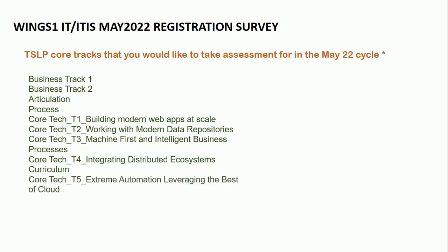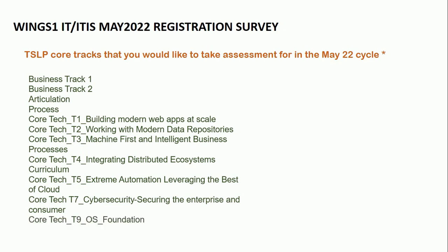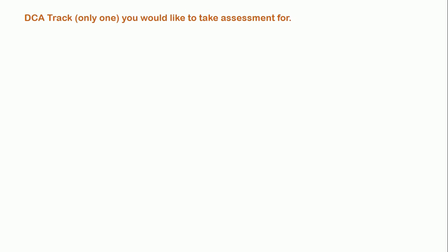Continuing with core track options: Core Tech T5 - Extreme Automation, Leveraging the Best of Cloud, Core Tech T7 - Cyber Security, Securing the Enterprise and Consumer, Core Tech T9 - OS Foundation, and then the DCA Track. You can choose any of these as per your convenience, and after that you have to select only one DCA track that you would like to take assessment for.